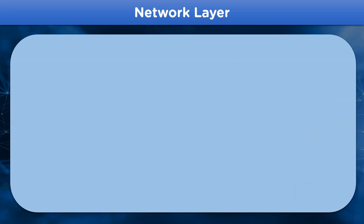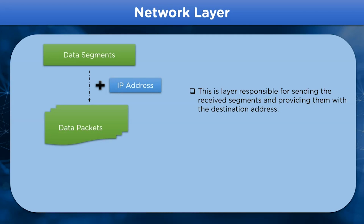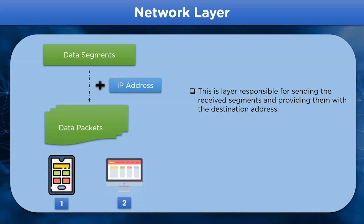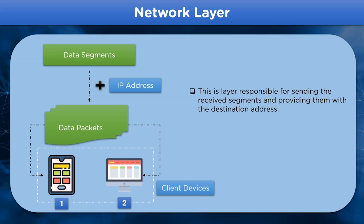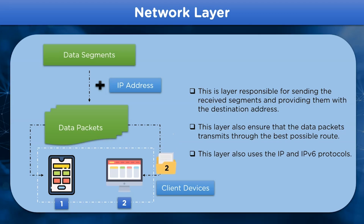The Network layer is the third layer from the bottom in the OSI model. This layer is responsible for breaking down segments into data packets by adding IP addresses received from the Transport layer. These data packets are then transmitted over the best possible route to the destination system, governed by internet protocols including IP and IPv6. For example, if data is to be transferred to a network device, the best route to that device is chosen.